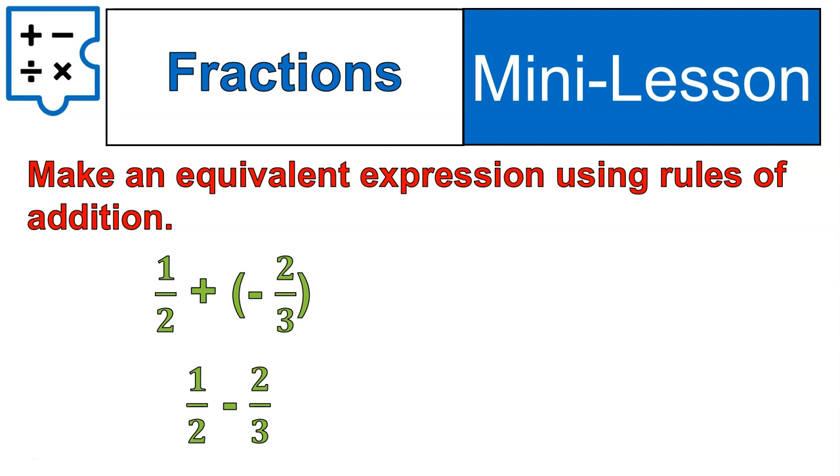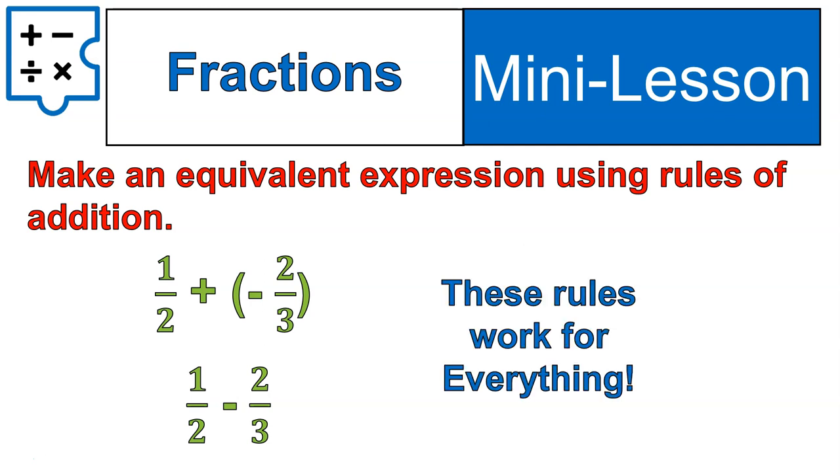The rules are exactly the same. We can change it from adding a negative to just subtracting. One half minus two thirds. These rules work with decimals. They work with fractions. They work with integers of all kinds. So they're basically universal rules.